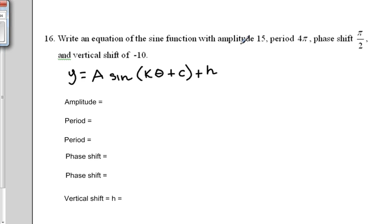It tells us our amplitude is 15. That can come from an absolute value of negative 15 or an absolute value of positive 15. So for our amplitude, we are going to write down plus or minus 15.